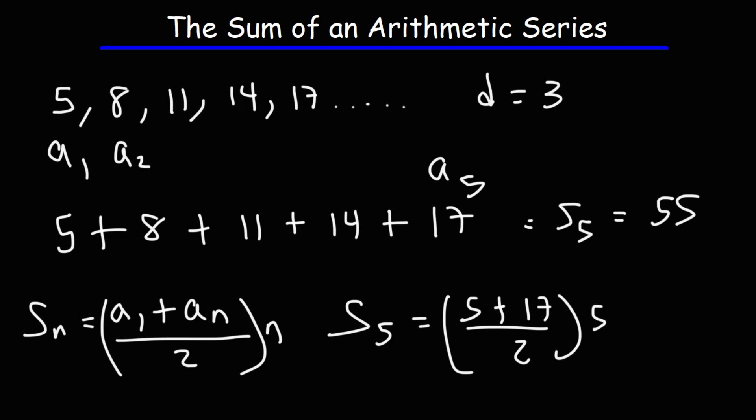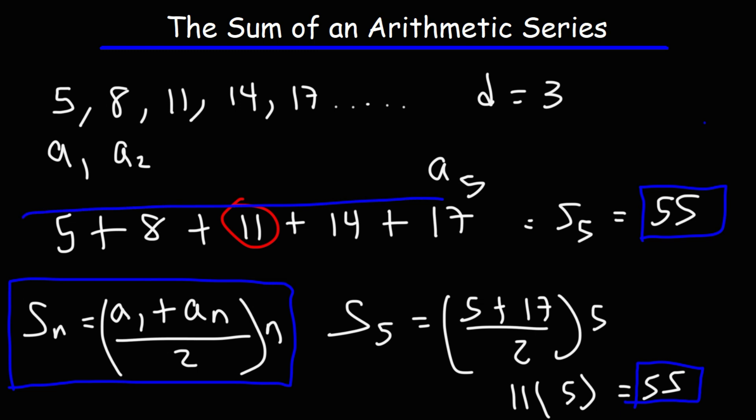Now the average of 5 and 17 is going to give you the middle number 11. 5 plus 17 is 22. 22 divided by 2 is 11. And then 11 times 5 is 55. And we can see that these two answers match. So this formula gives you the partial sum of an arithmetic series.